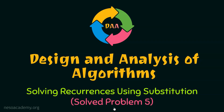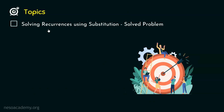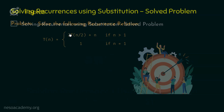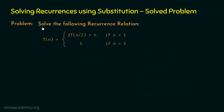Let's solve problem number 5 on recurrences using substitution. Here is the problem: solve the following recurrence relation. T(n) is equal to 2 times T(n/2) plus n, if n is greater than 1. If n is equal to 1, then T(n) is equal to 1.